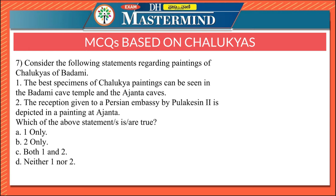The seventh question: the best specimens of Chalukya paintings can be seen in the Badami cave temple and the Ajanta caves. The reception given to a Persian embassy by Pulakeshi 2 is depicted in a painting at Ajanta. Both statements are correct. The best specimens of Chalukya paintings are in the Badami cave temple and the Ajanta caves, and the Persian embassy reception scene is depicted at Ajanta.